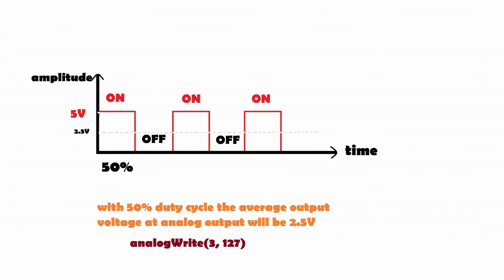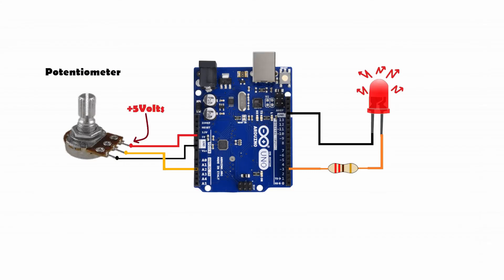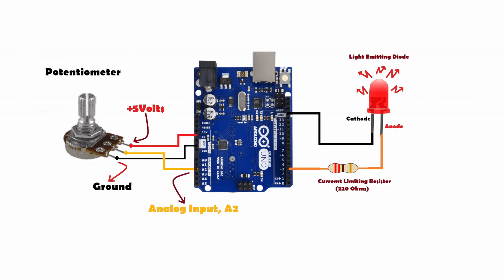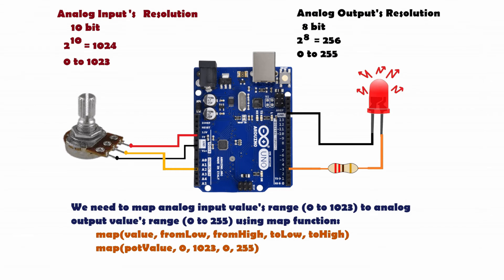Now we will interface the potentiometer and LED to control LED brightness. Before we implement the circuit, there is one issue: the analog input resolution is in the range of 0 to 1023, whereas the analog output resolution is 0 to 255. To match these ranges, we can either use a map function to map 0–1023 to 0–255, or simply divide the input value by 4 and write that directly to the output.